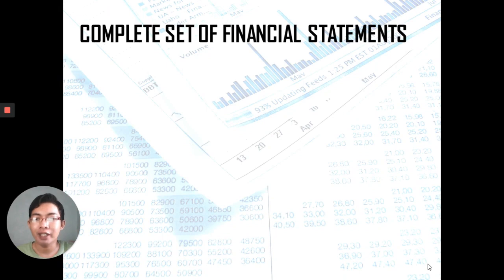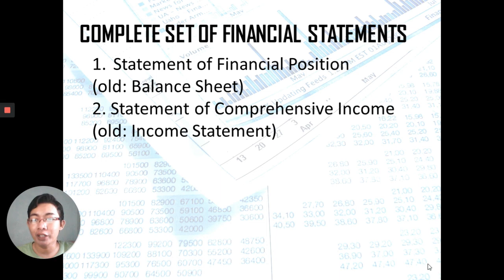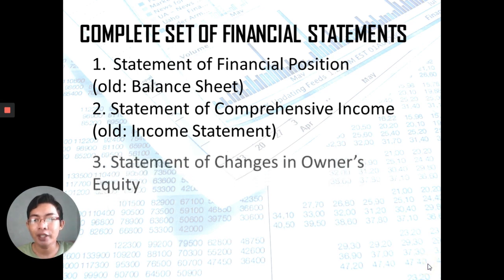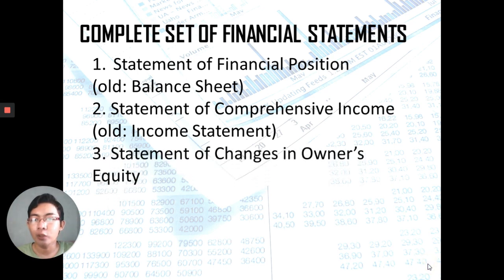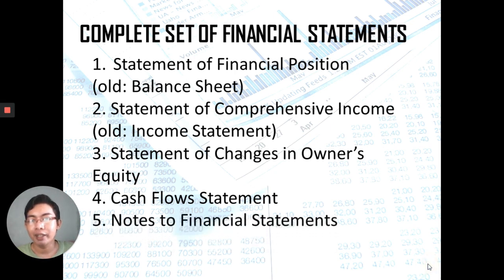There are five components of Financial Statements. First is the Statement of Financial Position, formerly known as the Balance Sheet. Then we have the Statement of Comprehensive Income, also known as the Income Statement — currently, they are planning to rename it the Statement of Financial Performance. Third is the Statement of Changes in Owner's Equity. Fourth is the Cash Flow Statement, which covers operating, investing, and financing activities. And lastly, we have the Notes to Financial Statements.